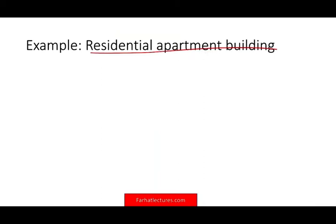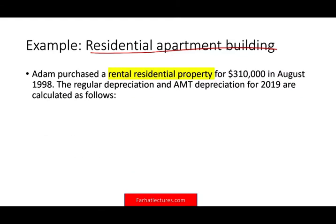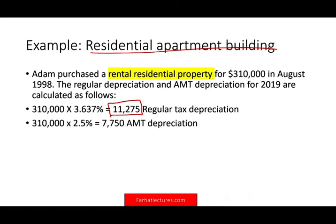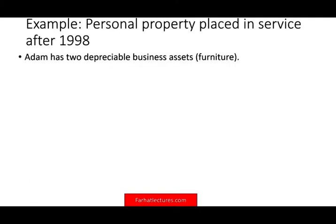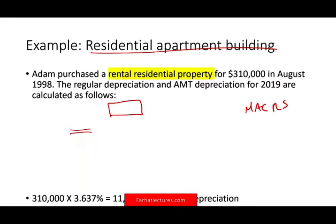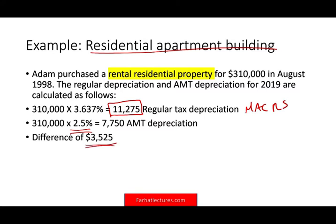Now let's assume the same building is an apartment building — now it makes a difference. For regular tax, you deduct depreciation over a 27.5-year life. For AMT, that becomes 40 years. For Adam's apartment building, regular tax depreciation is $11,275. For AMT, you multiply by 2.5 — the schedule applies between year 2 and year 40. The difference amounts to $3,525. For large companies or individuals with a lot of property, add more zeros — the difference can be substantial.